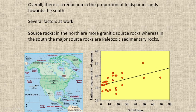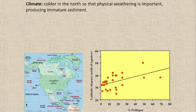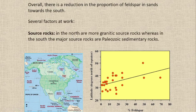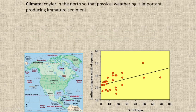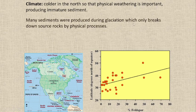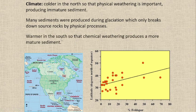Climate is cooler in the North — where we have a granitic source rock and cool climate condition, physical weathering is dominant, producing immature sediment. Also, many sediments were produced during glaciation, which only breaks down source rock by physical processes. Warmer in the South means chemical weathering is producing more mature sediments. In the South, the area is closer to the Tropic of Cancer, and that area generates chemically weathered sediments and produces mature sediments.